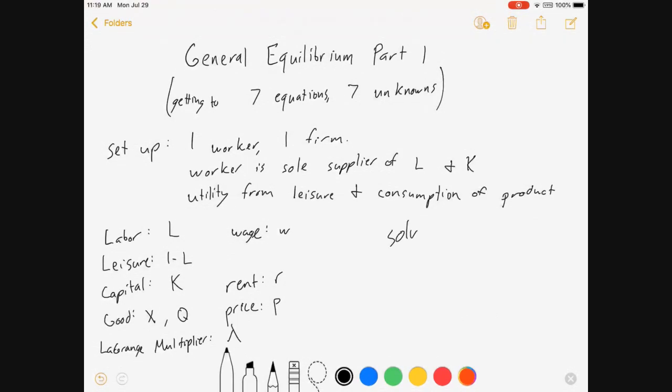So what do I want to solve for? I want to solve for labor, capital, my production good X or Q, however you want to call it. Wage, rent, price, and Lagrange multiplier. Seven variables. And so I need to figure out how to mess with my consumer problem and my firm problem to solve for all seven of those things. Once I do, I've got my general equilibrium.